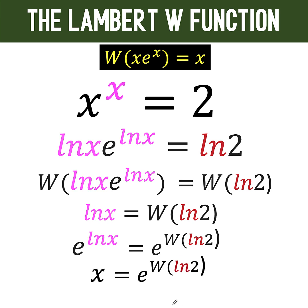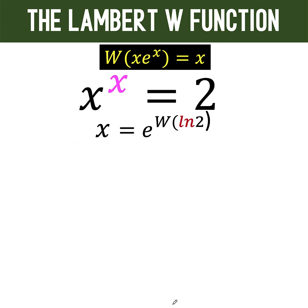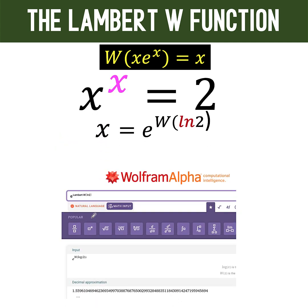Now, this right side is just a constant that we can compute using Wolfram Alpha. And taking now e raised to the Lambert W of ln of 2, that gives us a value of approximately 1.5596. And this is now the value of x.